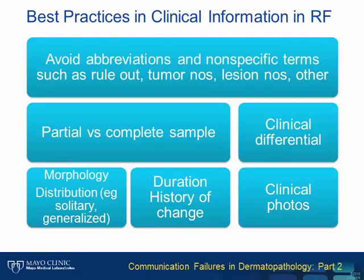The best practices for provision of clinical information in the requisition form include avoiding abbreviations and non-specific terms such as tumor NOS, lesion NOS, and rule out, as well as providing a clinical impression or prioritized differential diagnosis, duration of the lesion, history of change, and description of morphology including lesion dimensions, and providing clinical photos.